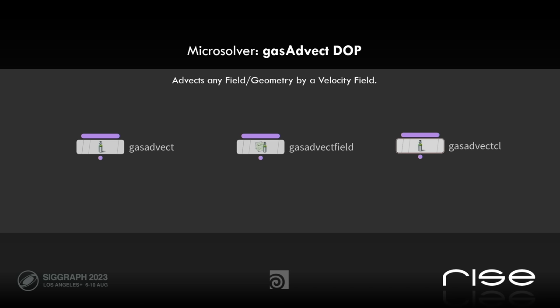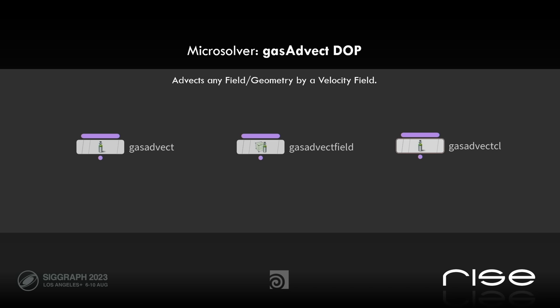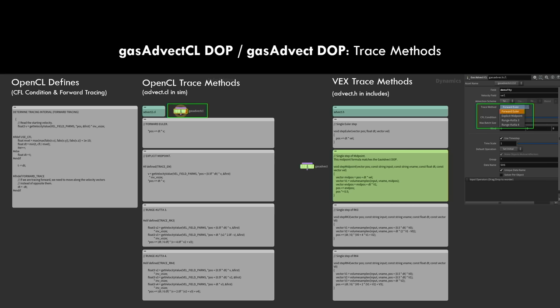This brings me to the first microsolver: the gas advect CL, the first one in the alphabet. There are three different ones. The system I'll show is always the DOP itself, and then copied from the Houdini documentation, a short summary — in this case: affects any field or geometry by a given velocity field. Three different types exist; in the end they all do the same, but with some differences in performance and the way they are coded. You can also look these codes up in the HDK or in the includes.